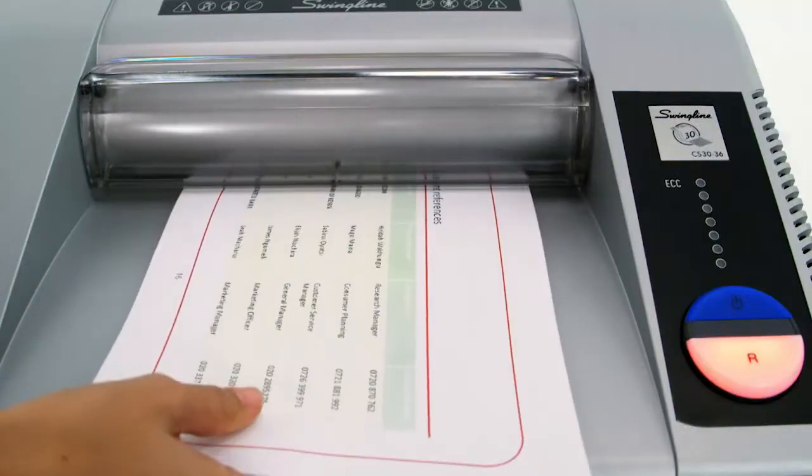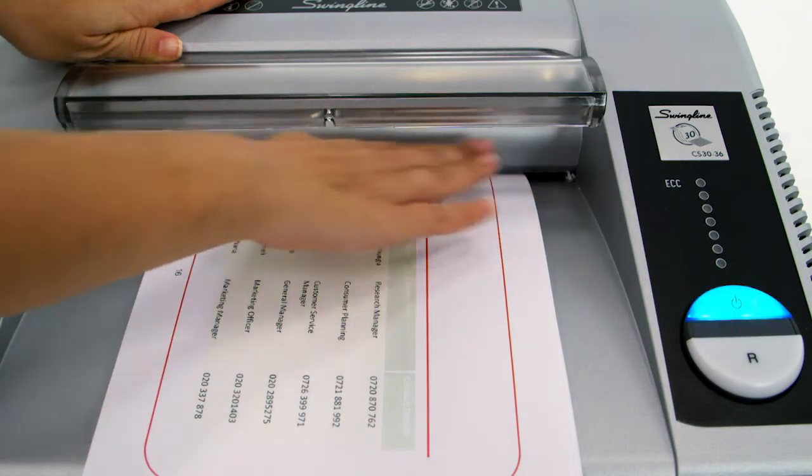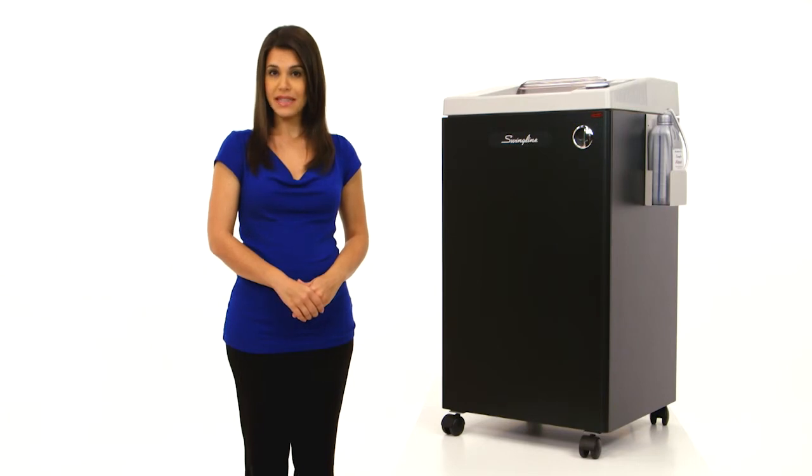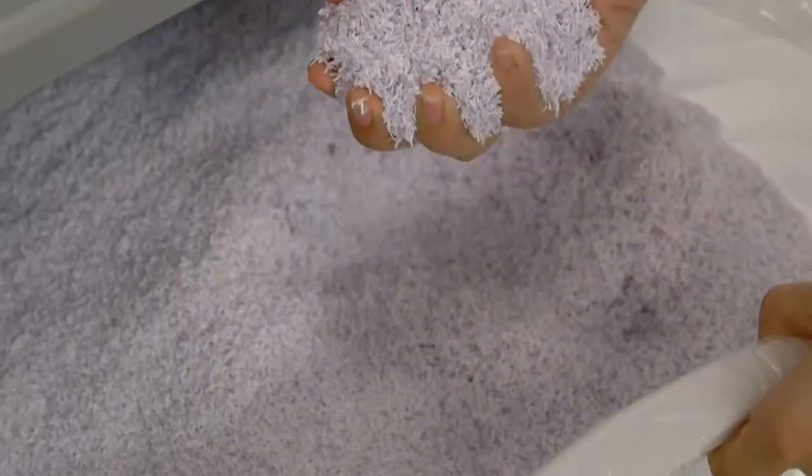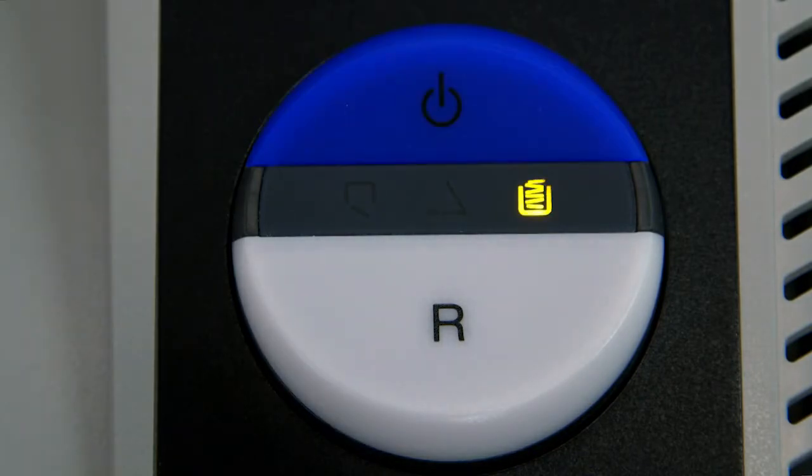If a jam does occur, the Fingersafe electronic safety guard automatically turns off the shredder when you remove the jam. Ideal for large commercial offices, this shredder has a continuous duty run time and a 30 gallon waste bin with an indicator light that tells you when the bin needs to be emptied.